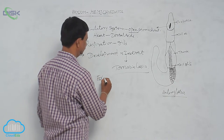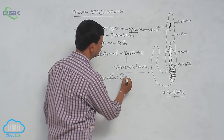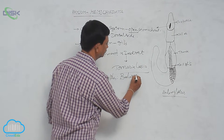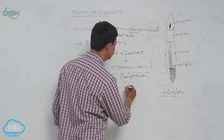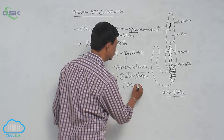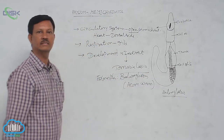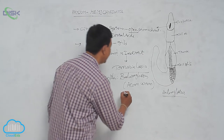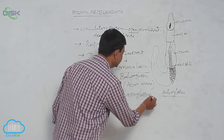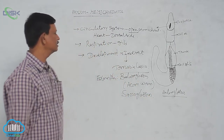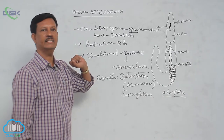Examples include Balanoglossus, commonly known as the acorn worm — here is the diagram of Balanoglossus — and another example is Saccoglossus. These two are examples that come under Hemichordata.